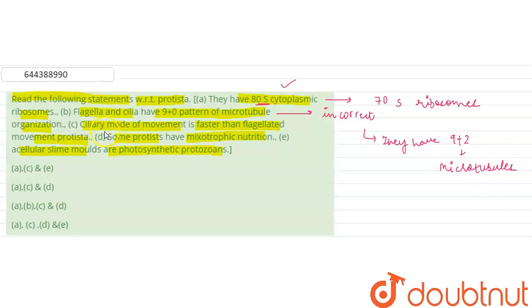In the third statement, it is written that ciliary mode of movement is faster than flagellated movement of protesta. It is also true that ciliary mode has so many cilia which help them in faster movement. So that's why this statement is also correct.